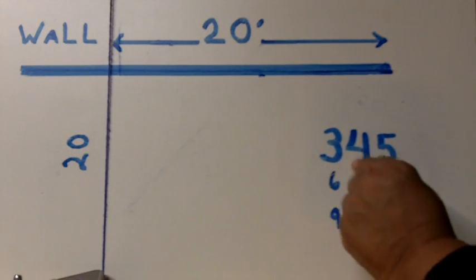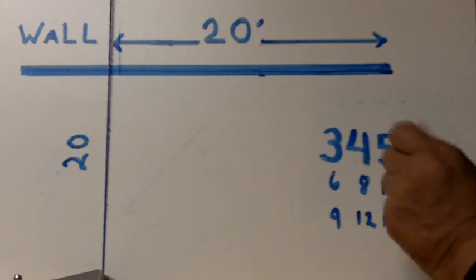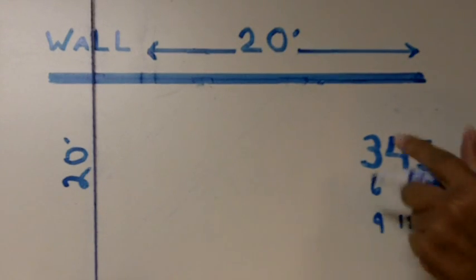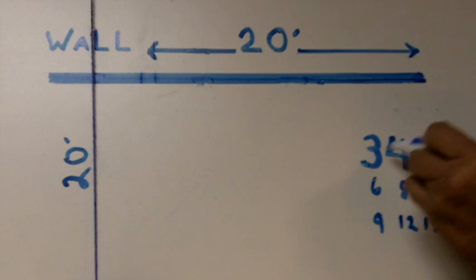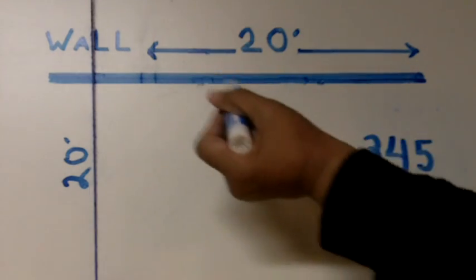3 representing 3 feet, 4 feet, 5 feet, or multiples of 3, 4, and 5. Now here's the thing: you may be able to get away with 3, 4, 5 on a short wall.